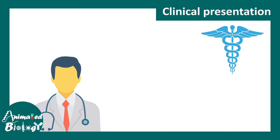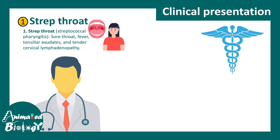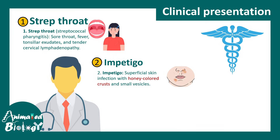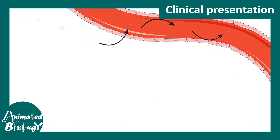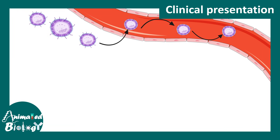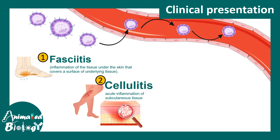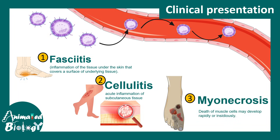There are different degrees of clinical presentation. One of the most common is strep throat, which includes sore throat, fever, tonsillitis, and in extreme cases lymphadenopathy near the neck region. There is also impetigo, presenting as honey-colored crusts and small vesicles around the mouth area. Scarlet fever includes erythematous rash, strawberry tongue, and sandpaper-like rashes. This bacteria can also enter the systemic circulation leading to fasciitis, cellulitis — acute inflammation of the subcutaneous tissue — and in extreme cases myonecrosis, meaning death of muscle cells.